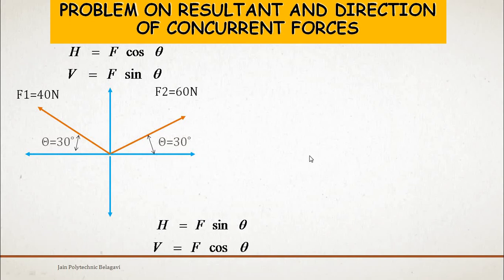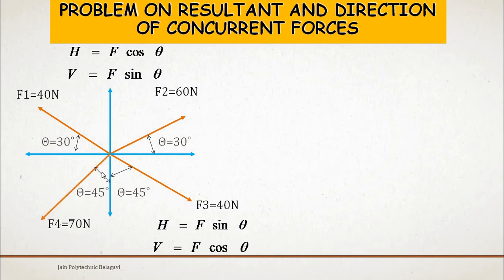Now we concentrate on forces acting with respect to the y-axis. F3 is 40 N at θ = 45 degrees, and F4 is 70 N, also acting with respect to the vertical axis. For these forces, the horizontal component is F sin θ and the vertical component is F cos θ — exactly opposite to the x-axis forces.